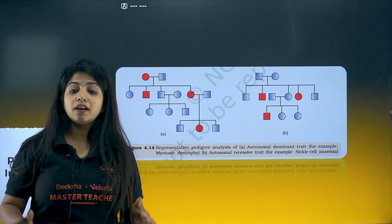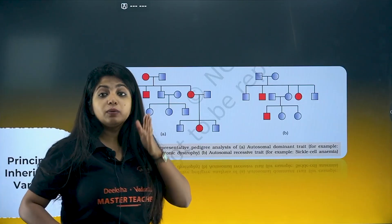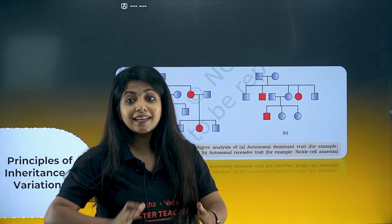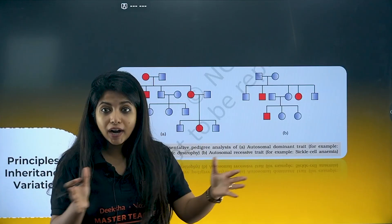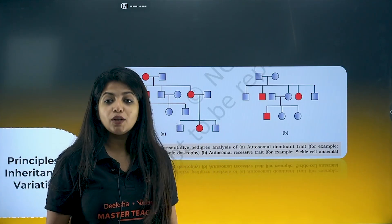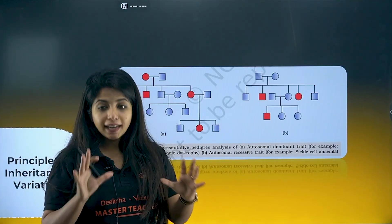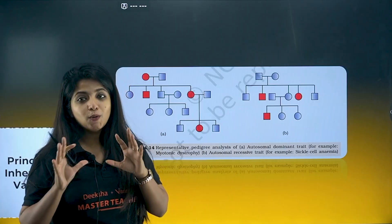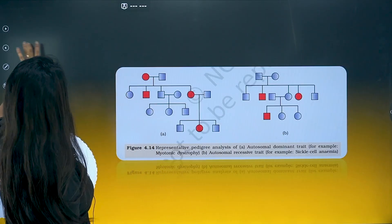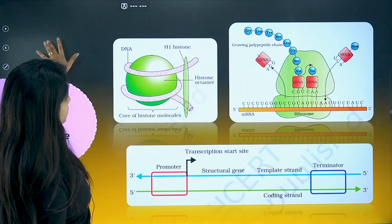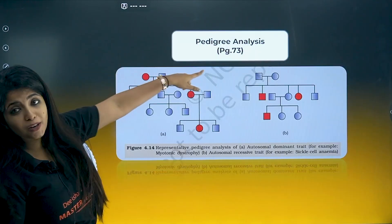You should understand the difference between sex-linked and autosomal disorders in the pedigree chart. Look for that carefully before you go write the examination. The pedigree chart topic is on page number 73.